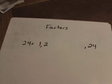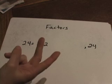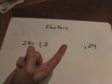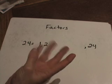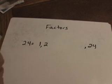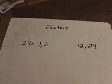So 2 times what is 24? If you can't figure that out, you're going to have to use your fingers. And you're going to go 2, 4, 6, 8, 10, 12, 14, 16, 18, 20, 22, 24. So I just held up 12 fingers. 2 times 12 is 24.